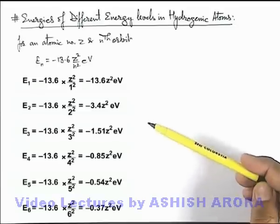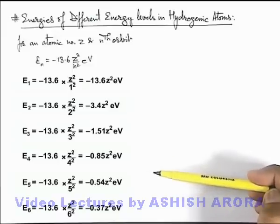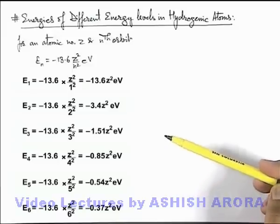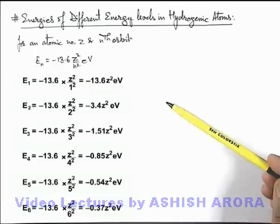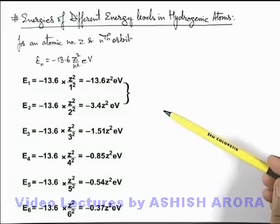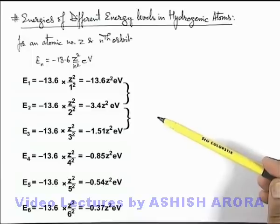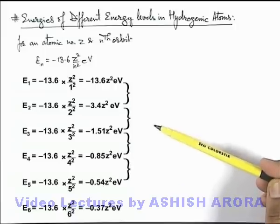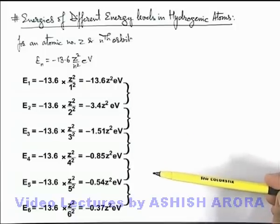Now why have I calculated all these energies? Just have a look at the difference between these successive energy levels. If we look at the difference of first and second orbit, this difference is 10.2 Z squared eV. The difference of second and third is 1.89 Z squared eV, difference of third and fourth is 0.66, and then 0.31 and 0.17 Z squared electron volts respectively.